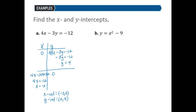For Part B, y equals x squared minus 9, we can do a similar calculation. We let x equal zero and solve for y. If x is equal to zero, we get y is equal to 0 squared minus 9, so y is equal to negative 9.